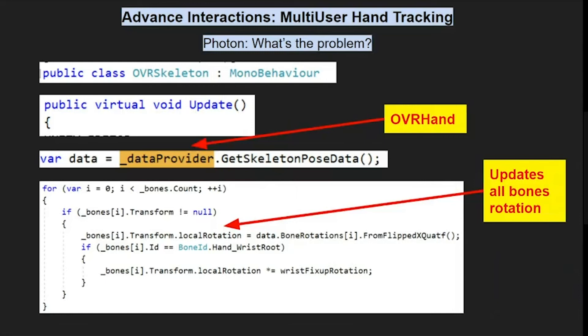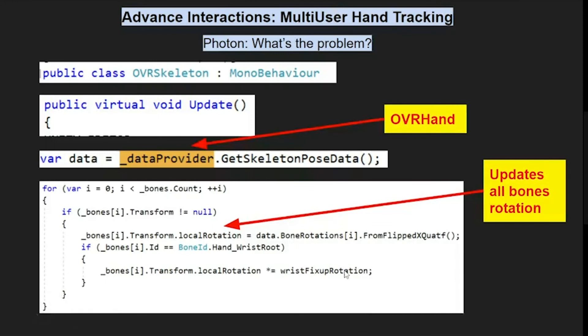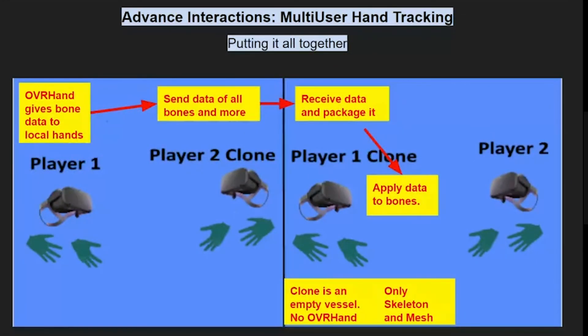This is more or less how that data flows in a single-user experience. You have your OVRHand collecting that data into its own struct - it's going to be receiving the data from the cameras, probably. Then the OVRSkeleton is going to ask the OVRHand to receive that data. So the data provider is actually the OVRHand. It's going to get skeleton pose data, and then on the update loop of the OVRSkeleton, we're going to adjust all of the rotations of our bones based on that.